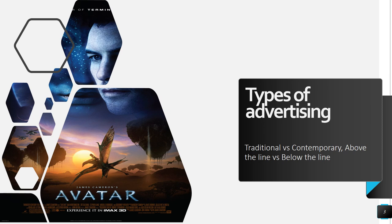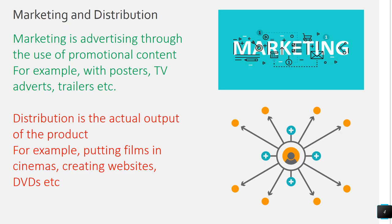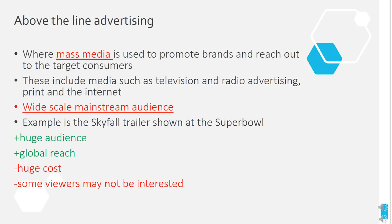We need to know traditional and contemporary methods, and we need to understand above the line and below the line advertising. It's quite useful to understand the difference between marketing and distribution. Marketing is the actual advertising of a product through promotional content — the usual methods are posters, TV adverts, and trailers. Distribution is the actual output of the product — how do you get it so that people can actually see the film, read the magazine, or watch the TV program.